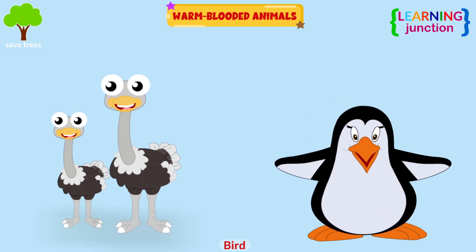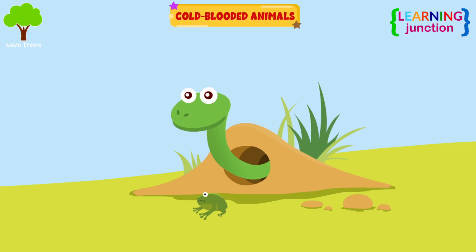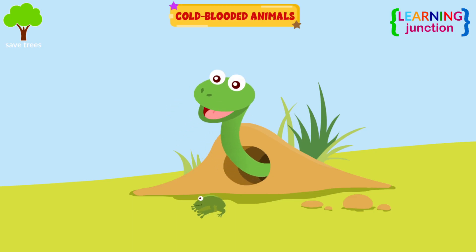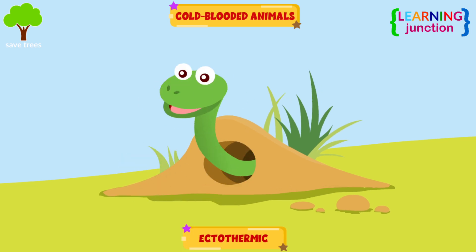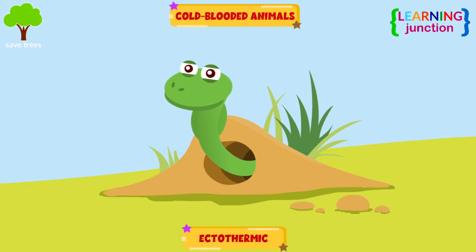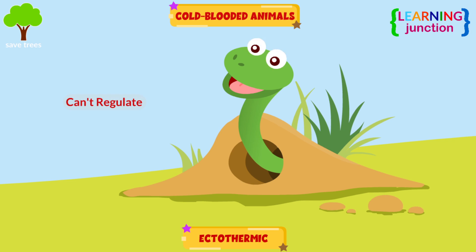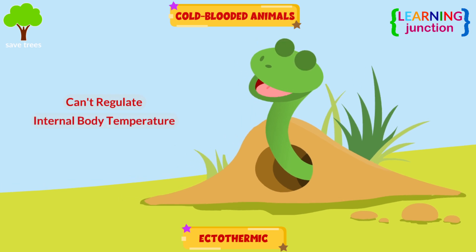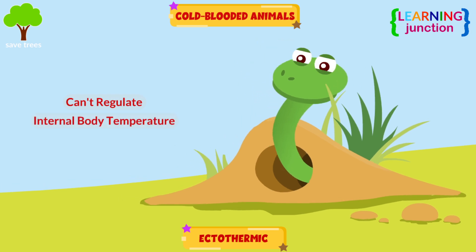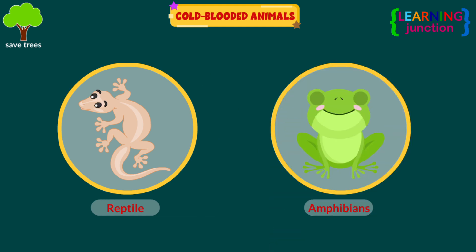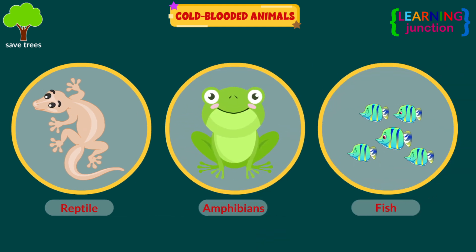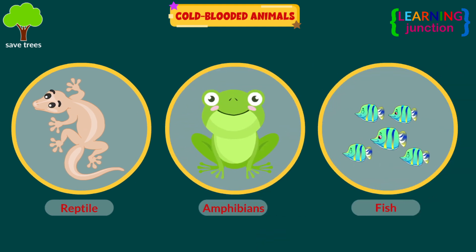Cold-blooded animals, also known as ectothermic, can be defined as animals that cannot regulate their internal body temperature with the change in the environment. Reptiles, amphibians, and fish come into this category.